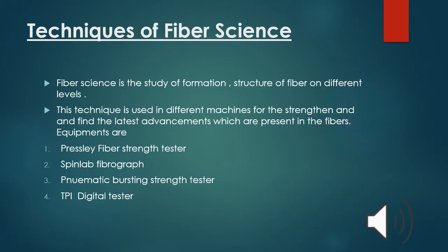Techniques of fiber science. Fiber science is the study of formation, structure of fiber on different levels. This technique is used in different machines for the strength and to find the latest advancements which are present in the fibers. Equipment are Pressley Fiber Strength Tester, Spinlab Fibrograph, Pneumatic Bursting Strength Tester, TPI Digital Tester. It is used for the TPI twist per inch test of yarns. Pneumatic burst strength to check the knitted fabric burst strength. Spinlab micronaire to calculate the fineness of the yarn. Pressley fiber strength to check the strength of cotton fibers. These are the different machines which are used to find the advancement and characteristics of the fibers of different synthetic or man-made.